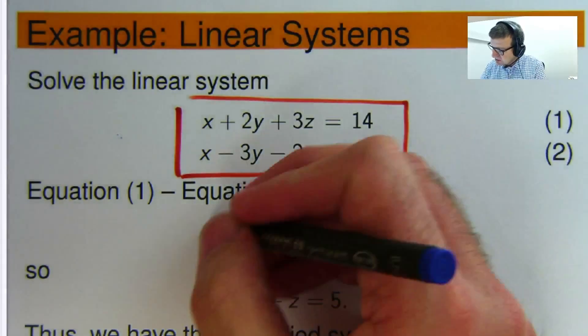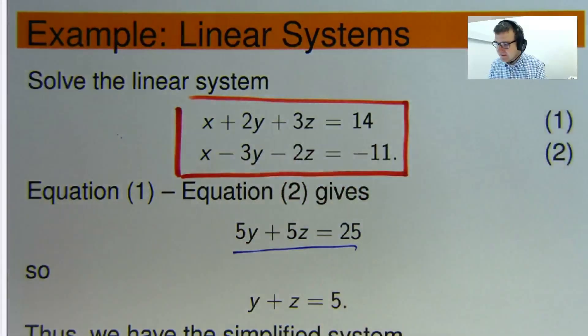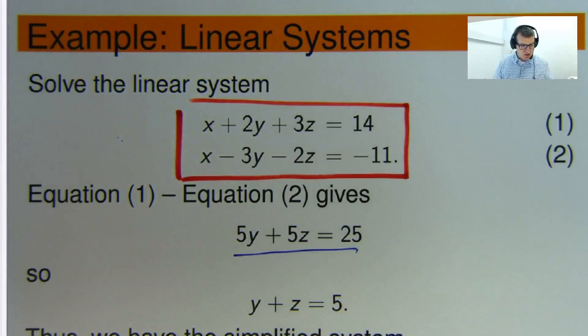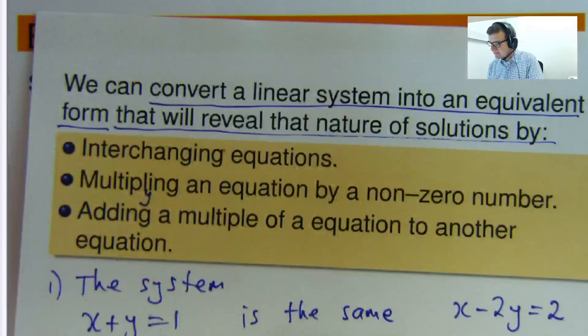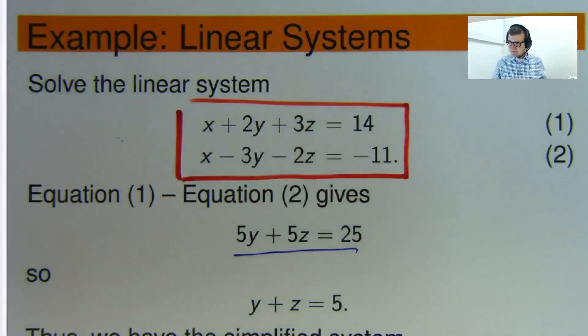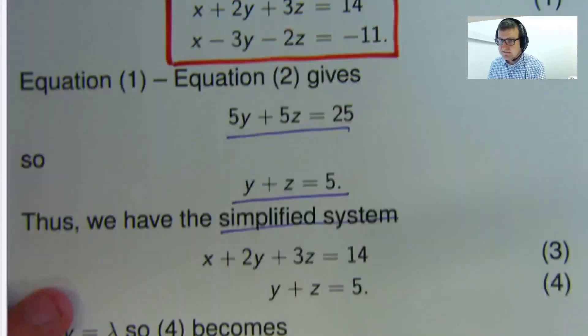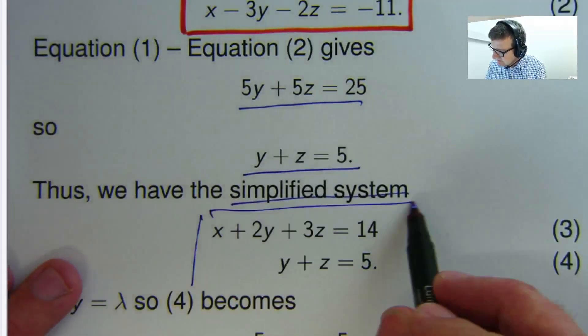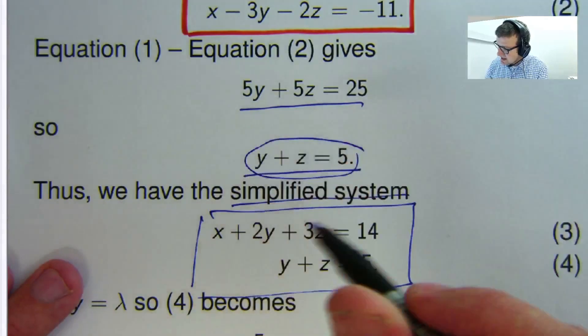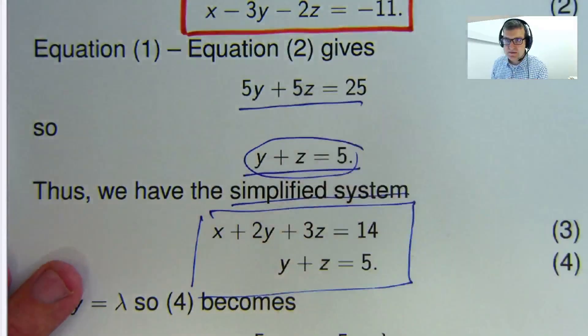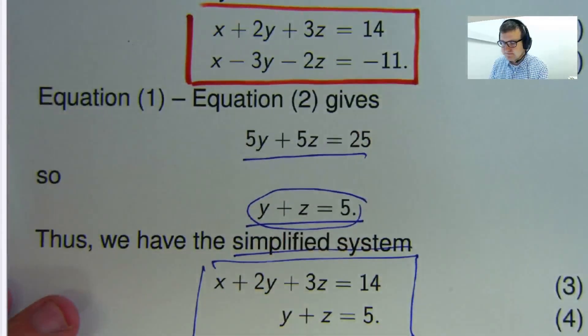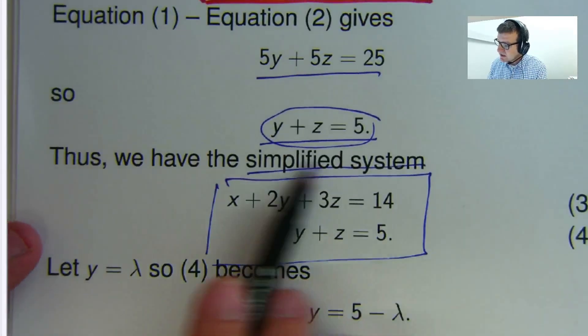And what I've done then is multiplied this new equation by one-fifth, both sides by one-fifth. Again, I can do that because it doesn't change the nature of the solutions. So basically I've done this and this. So what I have now is I've written down this simplified system just by using this new equation and the first equation up here.